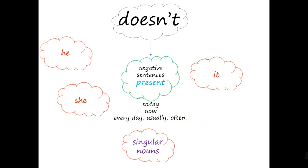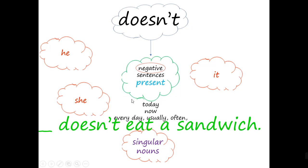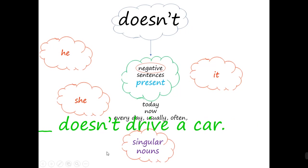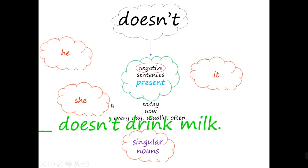The same with "doesn't" — negative sentence in the present. The same time words apply, and the only thing that changes is "doesn't" for the third person singular. For example: he doesn't eat a sandwich, she doesn't eat a sandwich, my mother doesn't eat a sandwich, my father doesn't drive a car, it doesn't drive a car, a dog doesn't drive a car. Or: she doesn't drink milk, it doesn't drink milk, my parrot doesn't drink milk. The noun must be singular.